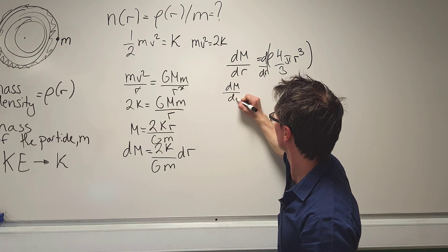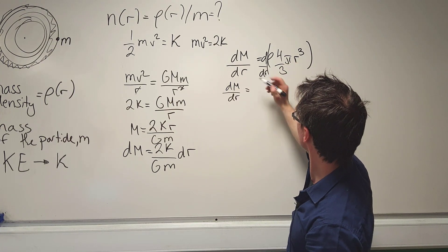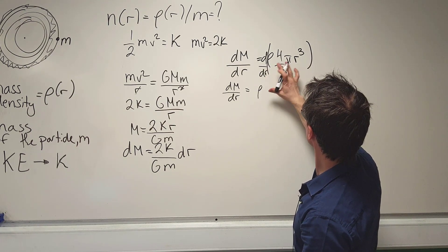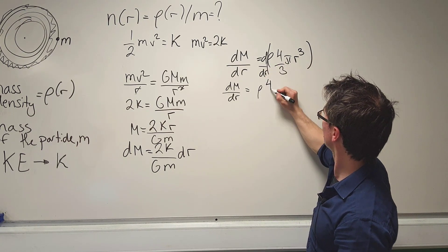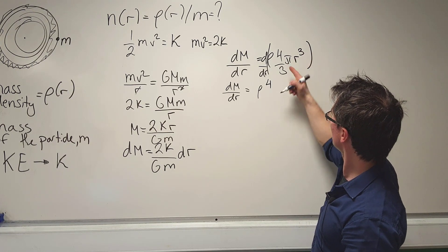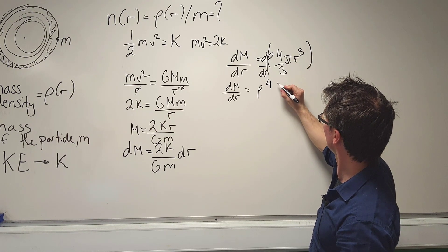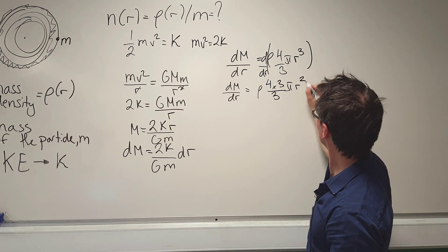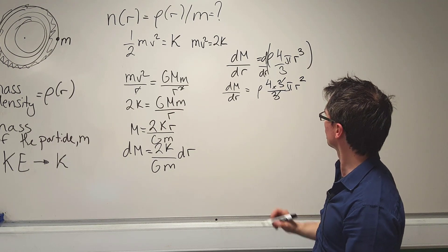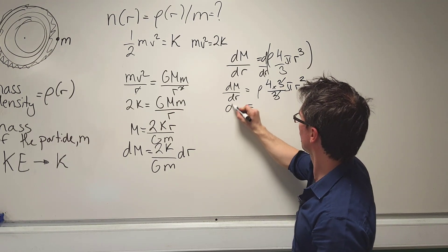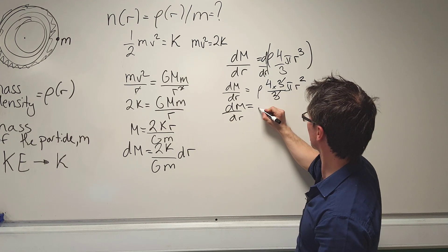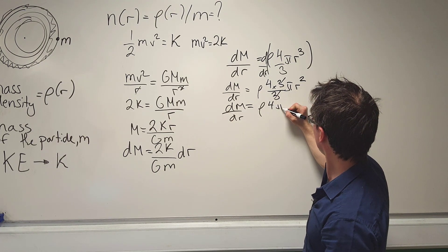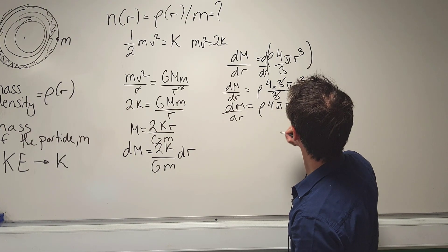So dm by dr is simply going to give me, let's differentiate that rho. We're going to get 4, the third will come down here and cancel out with the third. So let's just write that actually 4 thirds over 3 pi r squared. This here will be differentiated. So dm by dr will actually be equal to rho 4 pi r squared.